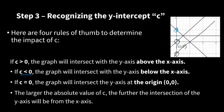The larger the absolute value of c, the further the intersection of the y-axis will be from the x-axis. This means in this function, c equaled 1, so it's rather close to the x-axis. In this function, c equals 2. It's a bit further away. If c would be equal to 4, then it would intersect right over here.